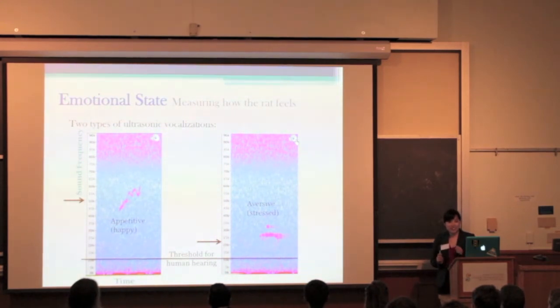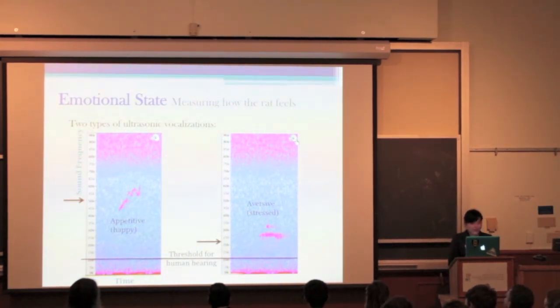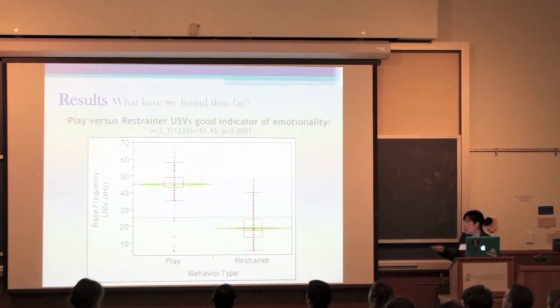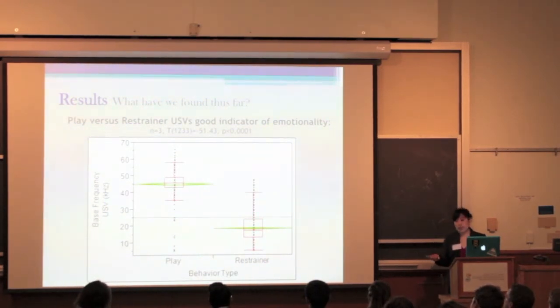Yeah, you can definitely hear. It's almost like screaming, like, oh my gosh, get me out of here! Help me! Who would want to help that? These results show exactly what we predict. The rats are making happy noises, 50k, during baseline play behavior, and stress vocalizations, around 22k, during baseline restrainer behavior.